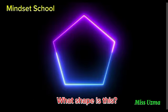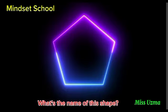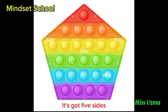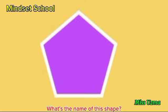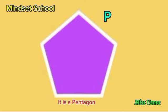What shape is this? What's the name of this shape? It's got five sides. It's got five corners. What's the name of this shape? It is a pentagon.